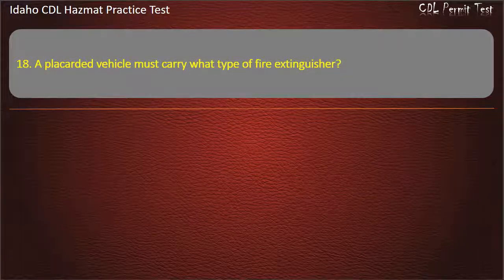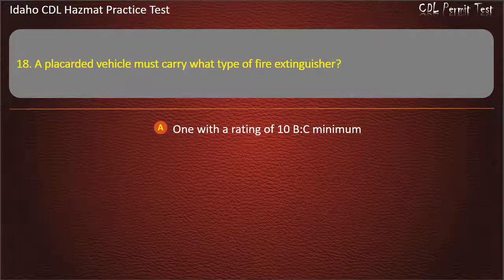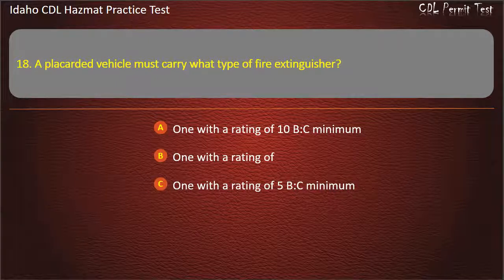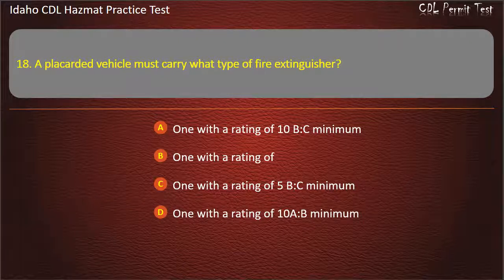Question 18. A placarded vehicle must carry what type of fire extinguisher? One with a rating of 10 BC minimum. One with a rating of 5 BC minimum. One with a rating of 10 AB minimum. Answer: One with a rating of 10 BC minimum.